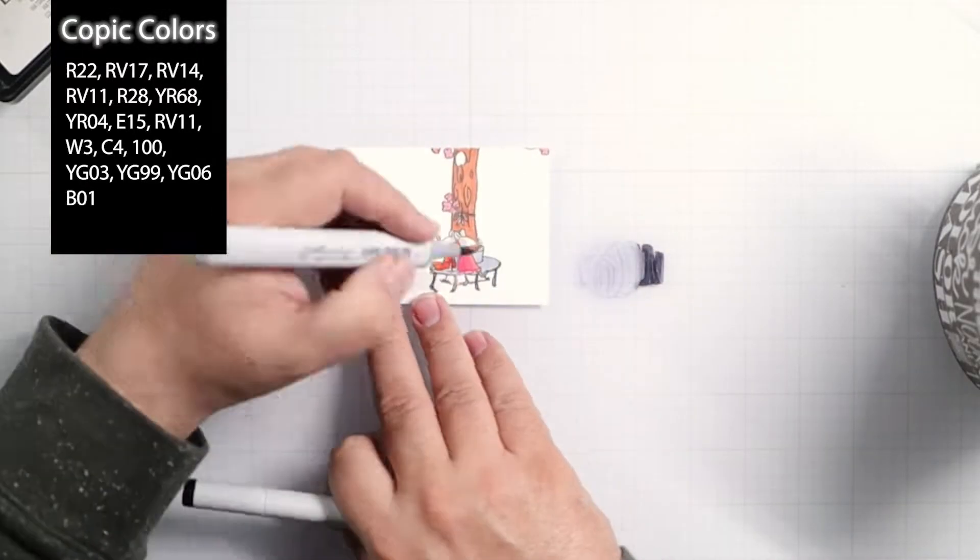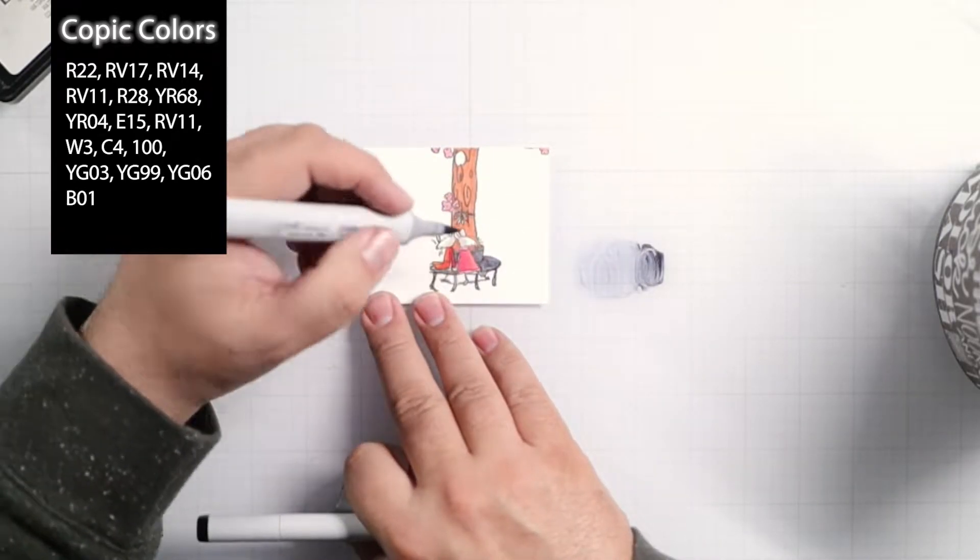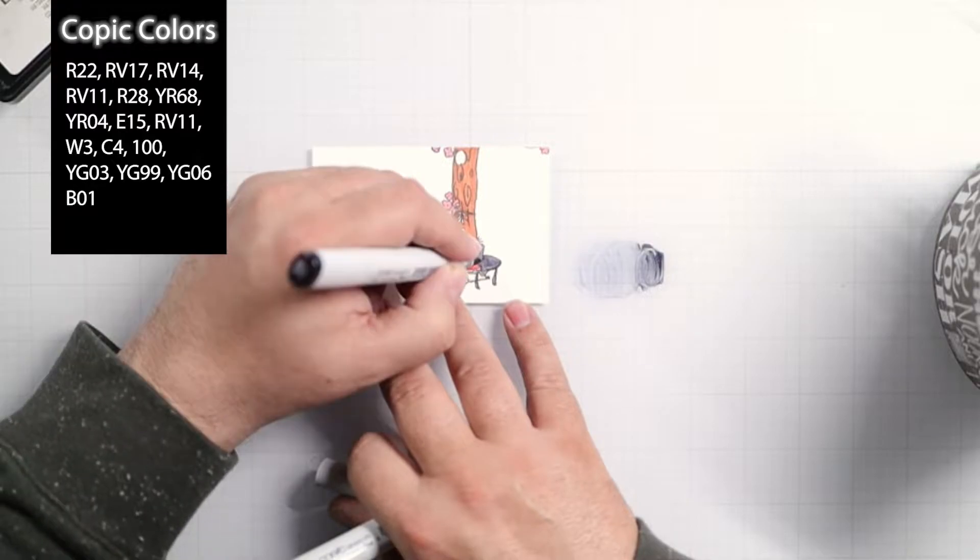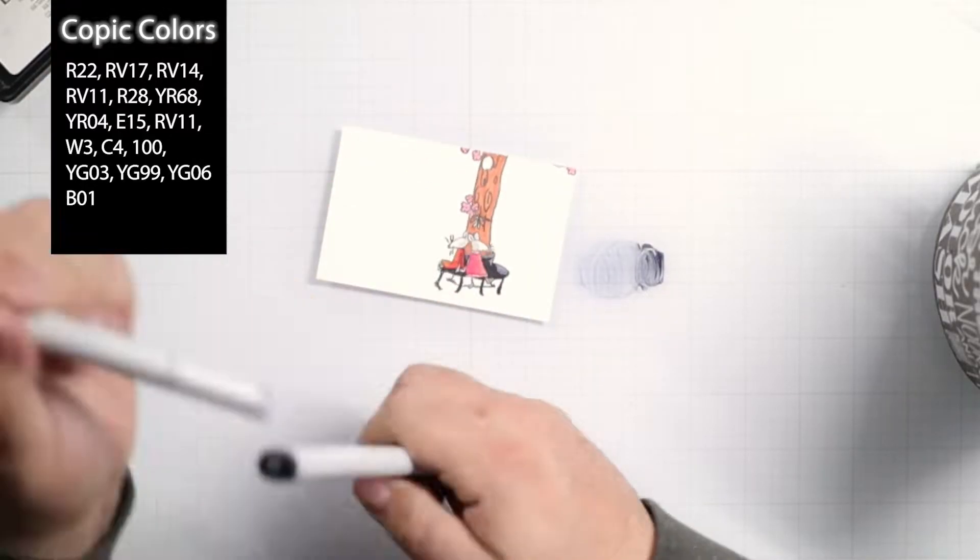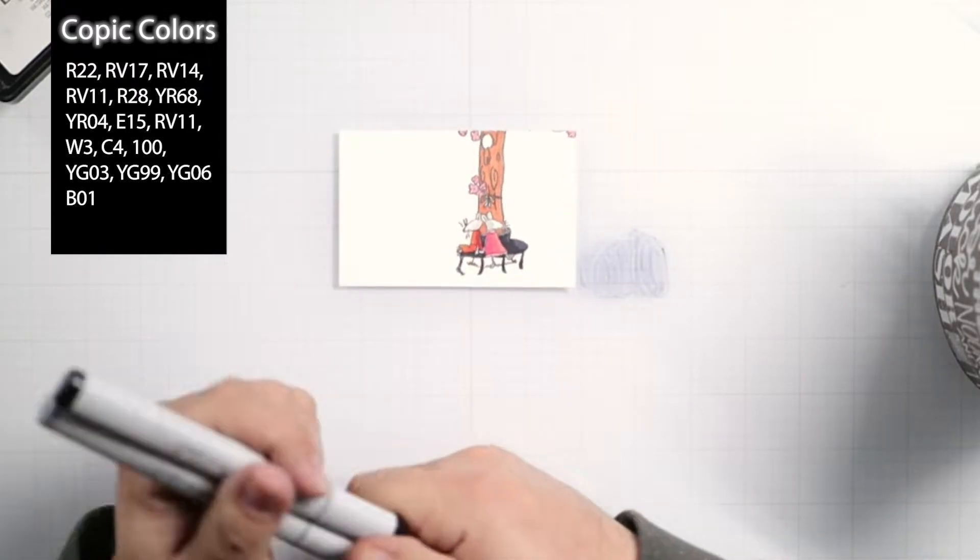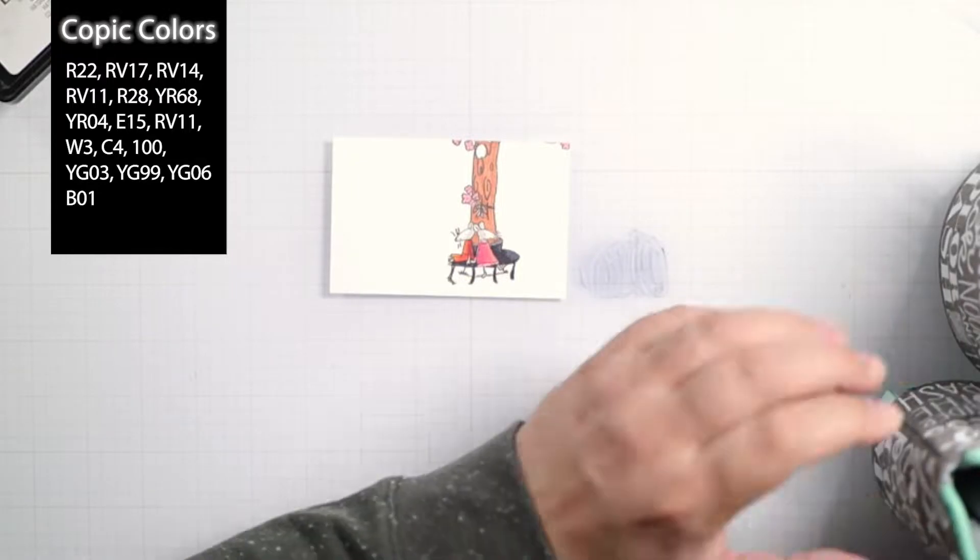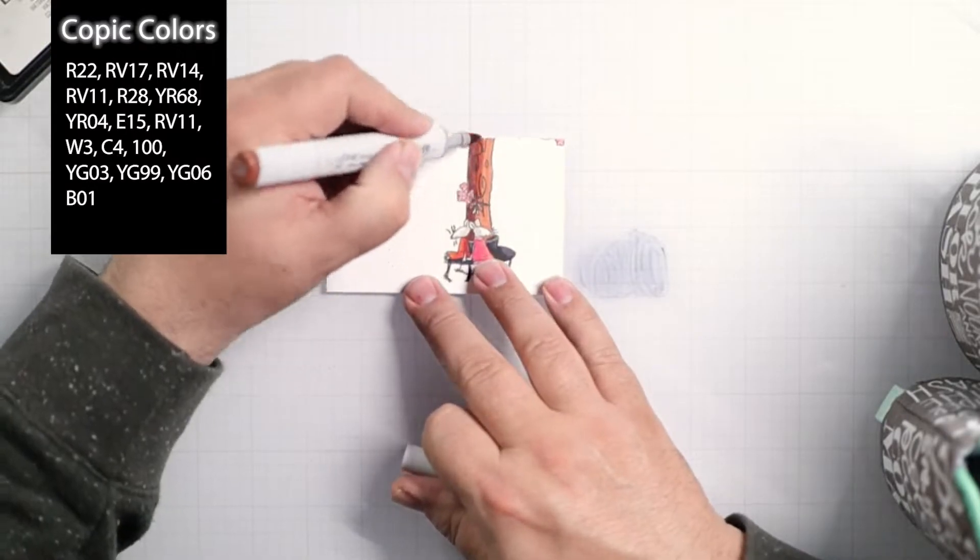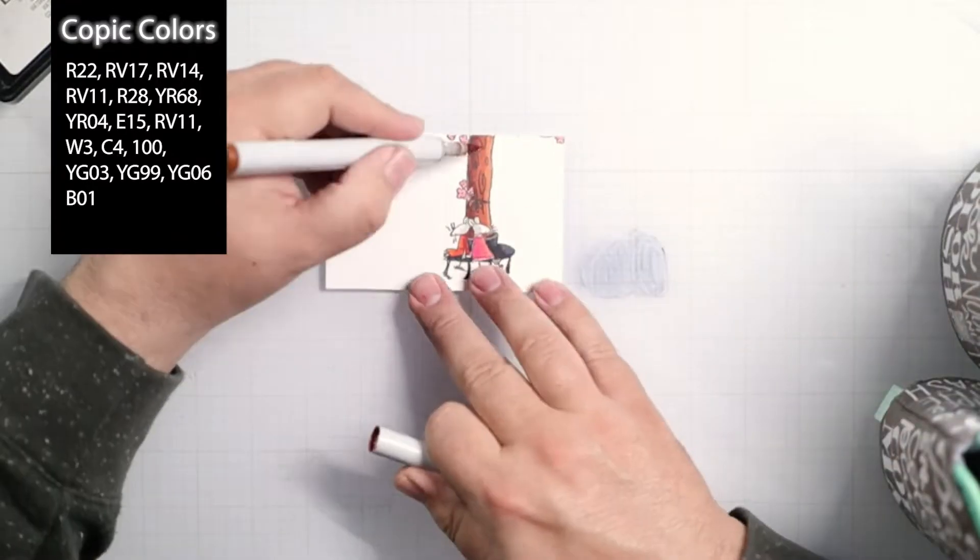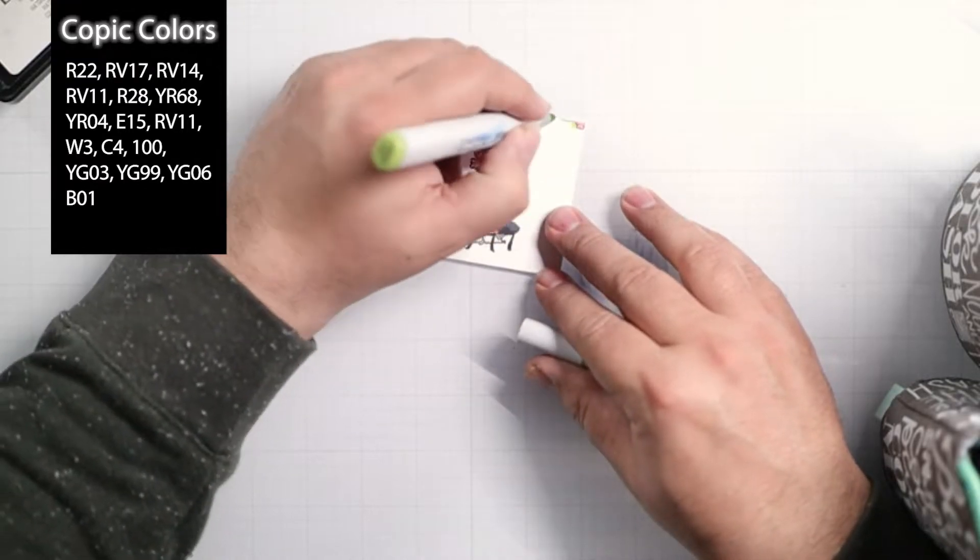YR04, E15, RV11, W3, C4, 100, which I just marked down on my palette there, my glass mat, and mixed it with my C4 to get a kind of an in-between color there. This is a great tip as well, so you don't have all of the Copic markers that you would like. You can mix them on a glass mat or just touch them end to end and get the colors that you want.